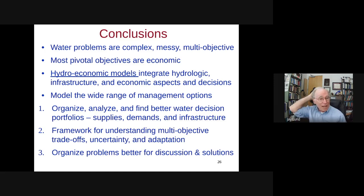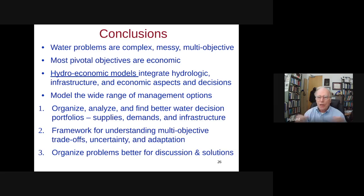Conclusions: these problems are messy, complex, and multiple-objective, with multiple near optima and lots of interesting modeling challenges. The pivotal objectives are typically economic, and environmental in California. Hydroeconomic models help us better integrate understanding of these problems and give a framework for exploring solutions, uncertainties, and trade-offs into the future, hopefully improving the quality and usefulness of discussions in management and policy and giving them a firmer scientific and technical ground.